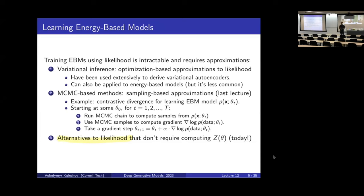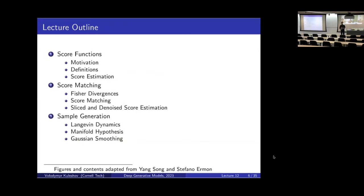We're going to see a different way of training an energy-based model, which will be more effective than using MCMC in many applications. As a result, it will allow us to learn energy-based models in a way that's more tractable and doesn't require dealing with the partition function. So here's the outline for the lecture: I will present a different way of learning an energy-based model using something called a score function. I'll start by defining what a score function is, then we'll look at how to learn it using algorithms called score matching, and finally how to do inference and draw samples.